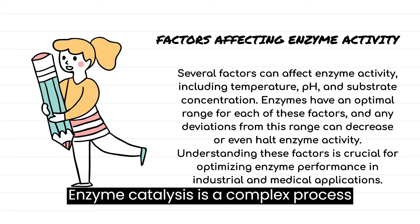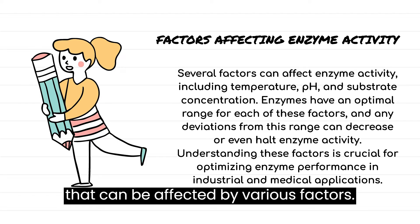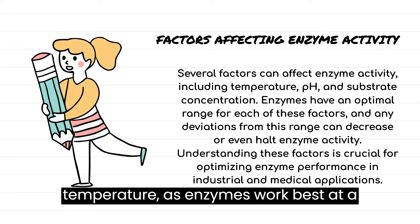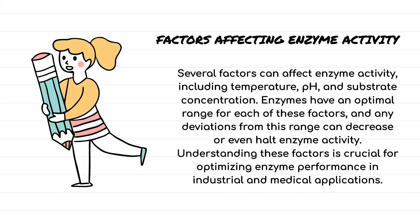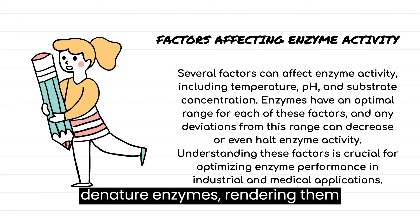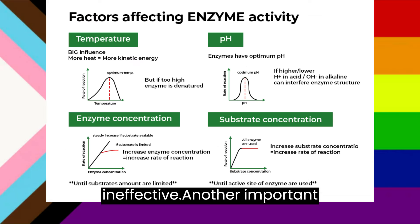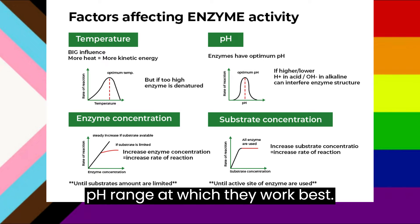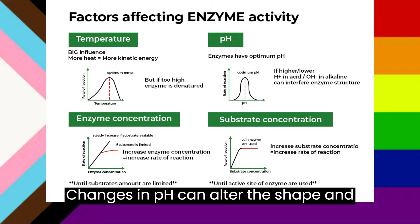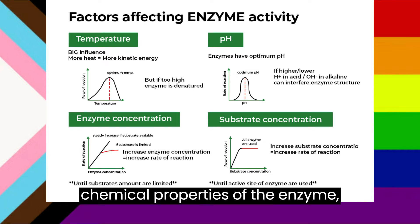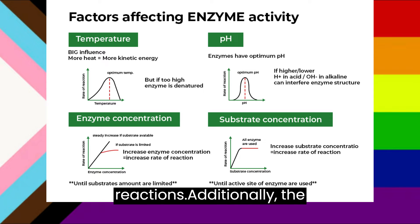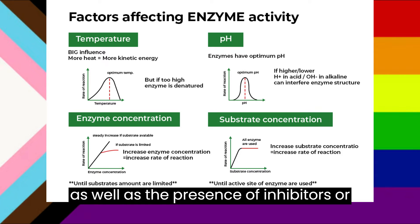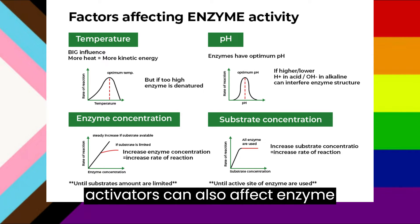Enzyme catalysis is a complex process that can be affected by various factors. One of the most important factors is temperature, as enzymes work best at a specific temperature range. Too high or too low temperatures can denature enzymes, rendering them ineffective. Another important factor is pH, as enzymes have an optimal pH range at which they work best. Changes in pH can alter the shape and chemical properties of the enzyme, affecting its ability to catalyze reactions. Additionally, the concentration of substrate and enzyme, as well as the presence of inhibitors or activators, can also affect enzyme activity.